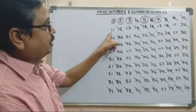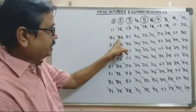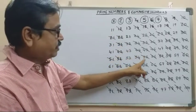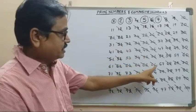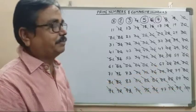Next, 11 table: multiples of 11 are 11, 22, 33, 44, 55, 66, 77, 88, 99. We cancel these from the table.